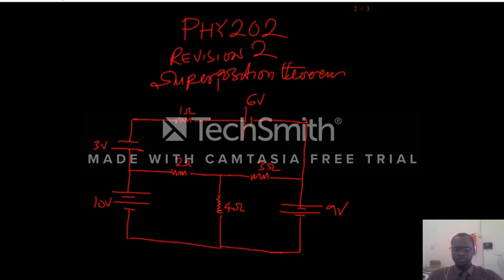So here is a question with two batteries and two cells. We are to use Superposition Theory to find the current across each of the resistors in this cycle.